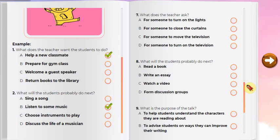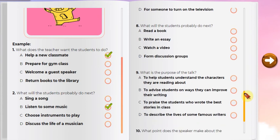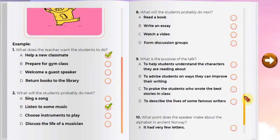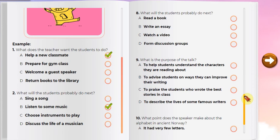Number nine. Listen to an English teacher speaking to her class. Before we start writing our stories, I want to show some ways you can make your characters more believable. You can try to give them real life details. One thing you might want to do is base your characters on people you know in real life. This is something that even many famous writers do. What is the purpose of the talk?